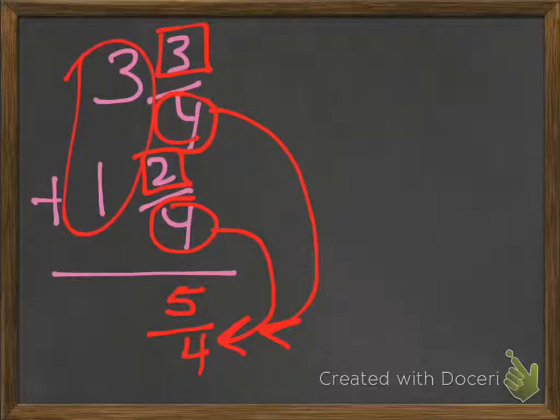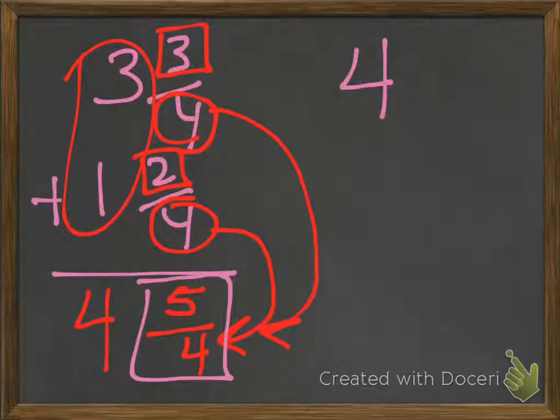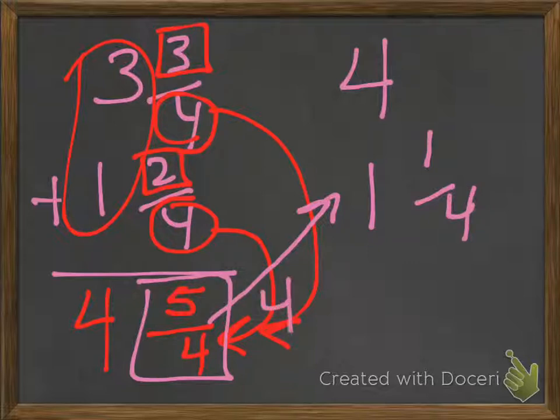And then we go ahead and add up the whole numbers which is 4. So now we're stuck with 4 and 5/4. Well, we know that that's an improper fraction, so that really represents... we can take our 4 whole here and this is really 1 whole and 1/4, because that's 4 over 4 is a whole plus we have an extra 1.